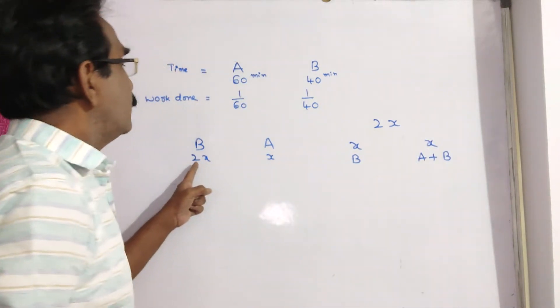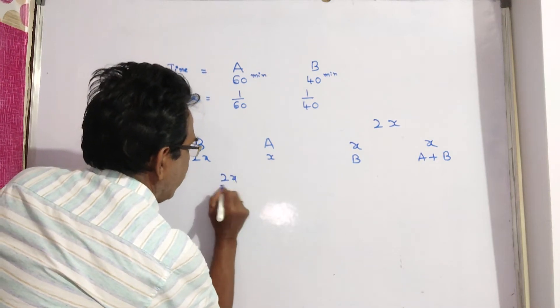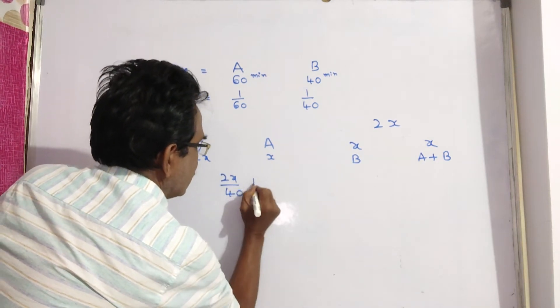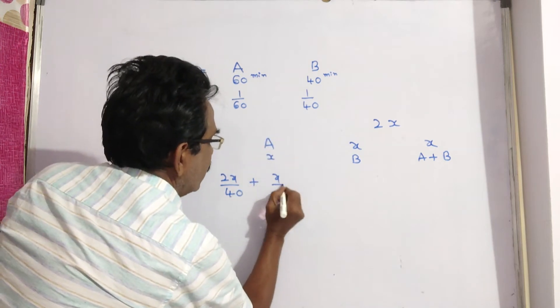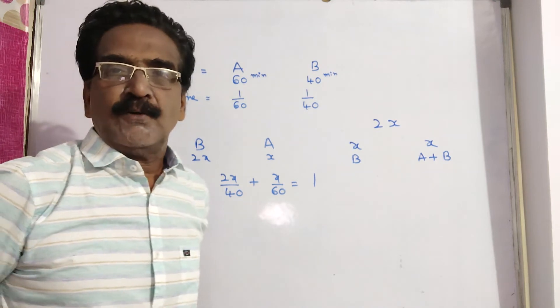So, in 2x minutes, the work done by pipe B is 2x into 1 by 40 plus pipe A in x minutes, x into 1 by 60 is equal to 1.